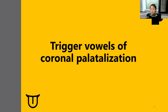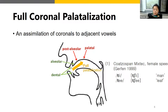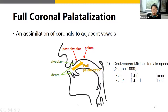I will show how it's complex by using a cross-linguistic pattern of trigger vowels of coronal palatalization. In order to investigate the articulatory motivation for coronal palatalization, this talk focuses on instances of coronal palatalization in which coronal stops are targets and vowels are triggers. There are two main types of coronal palatalization. The first type is full coronal palatalization, in which both the primary place and manner of articulation of the target coronal stop are changed — dental or alveolar stops become post-alveolar or palatal affricates.